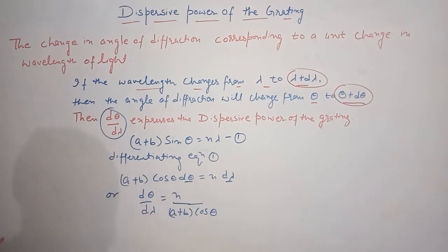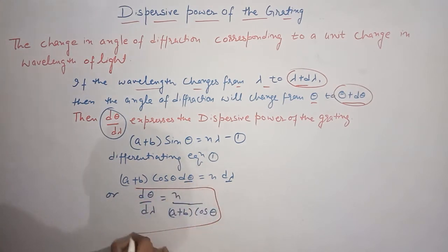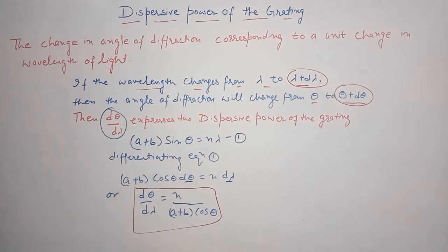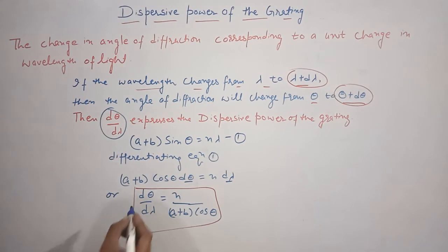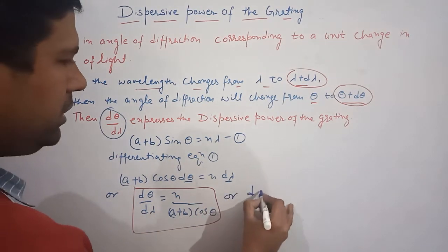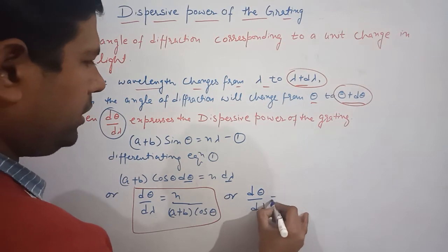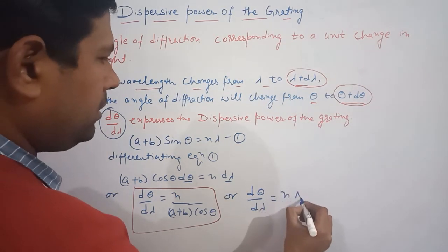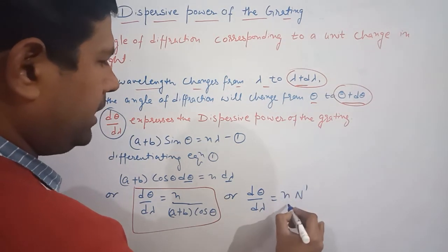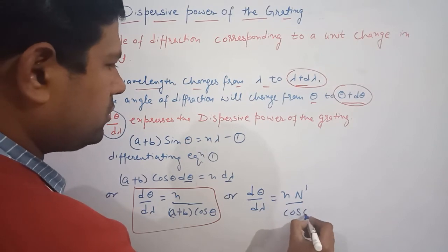This is the relation for d-theta by d-lambda. We can also write this as: d-theta by d-lambda equals N' upon cos theta, where N' is the number of lines per centimeter on the grating.